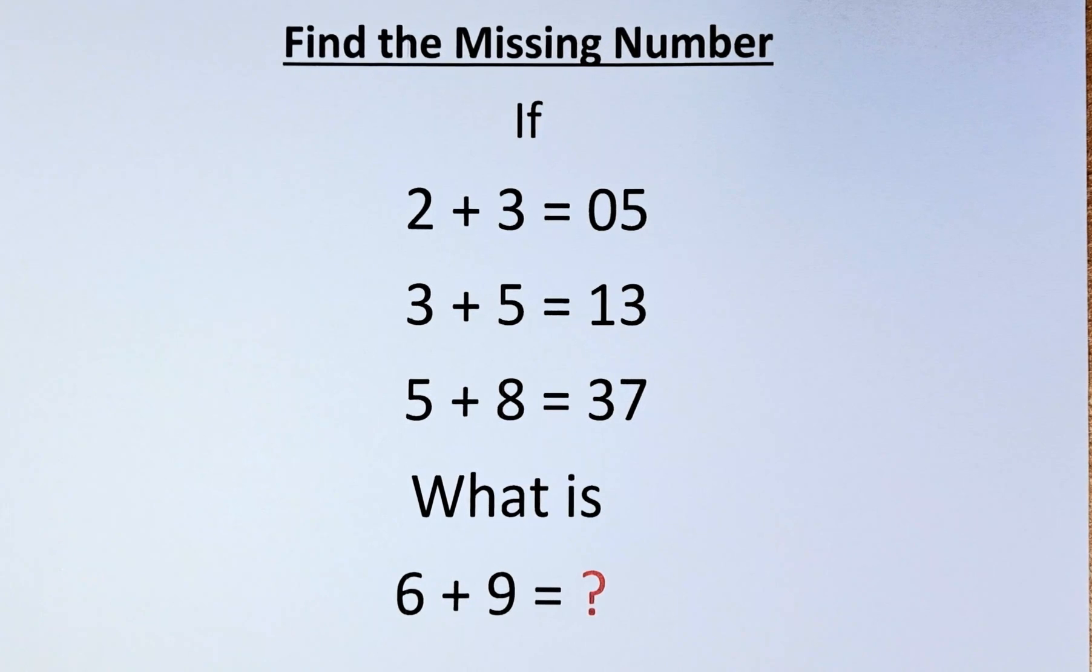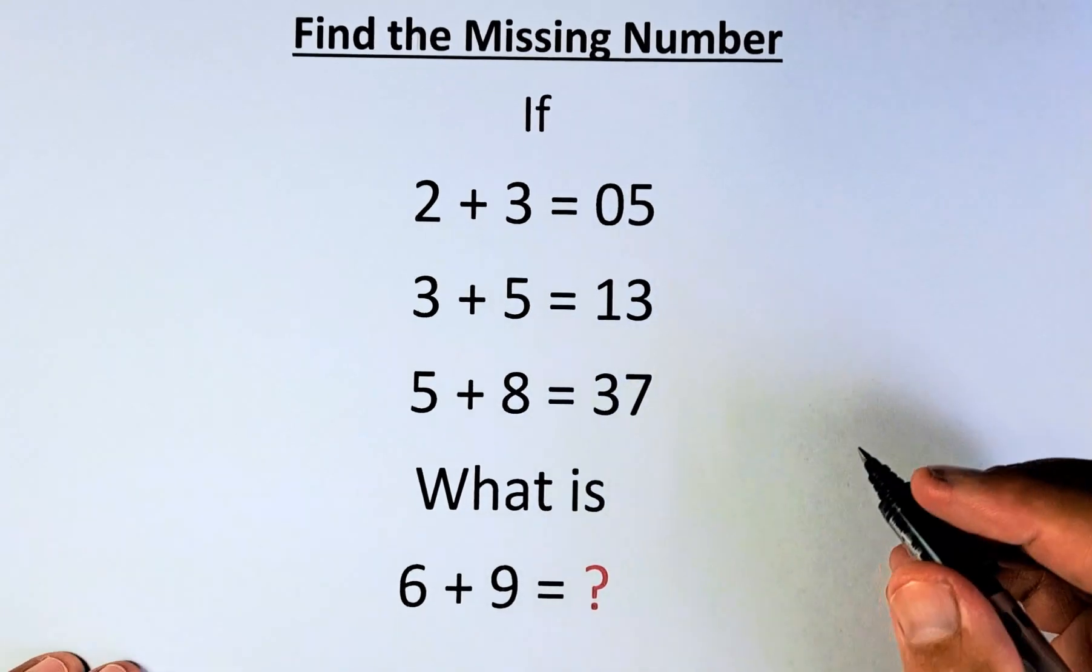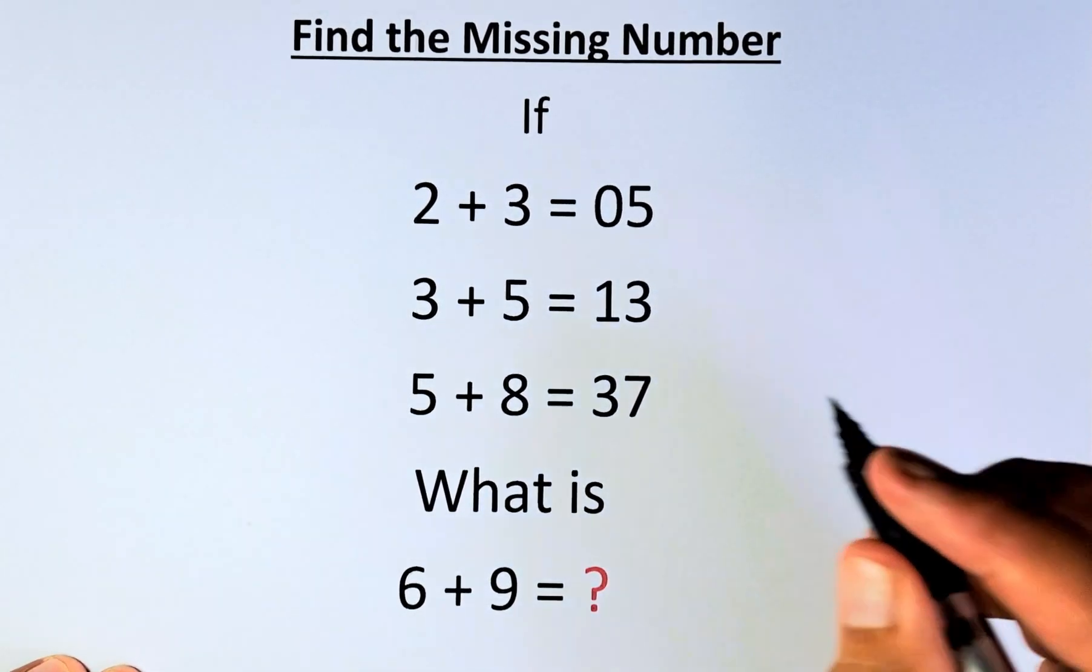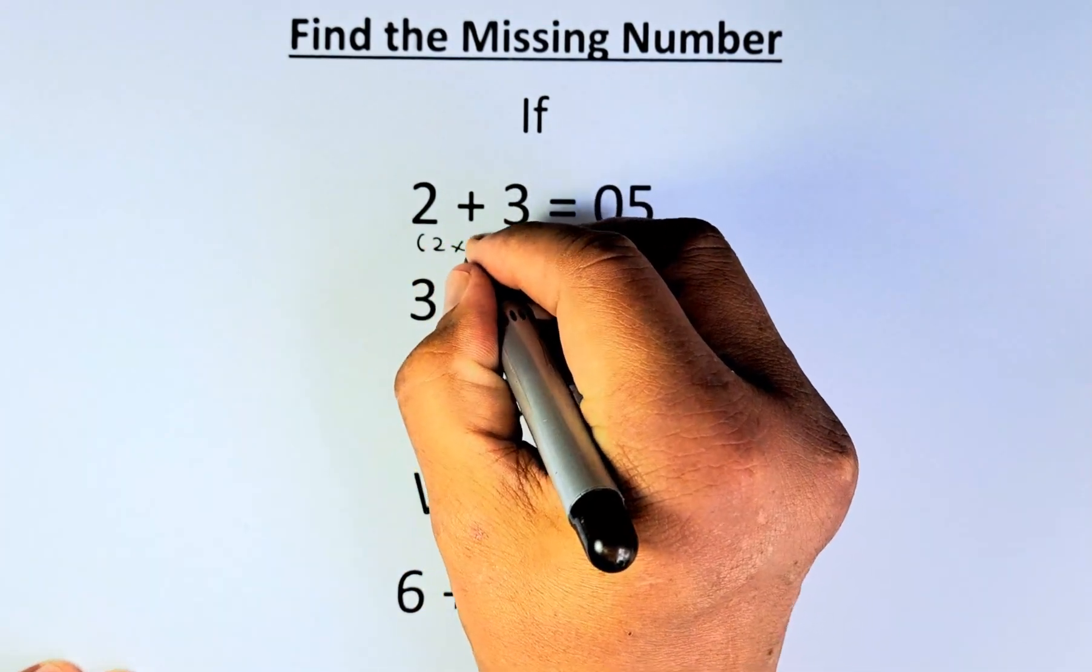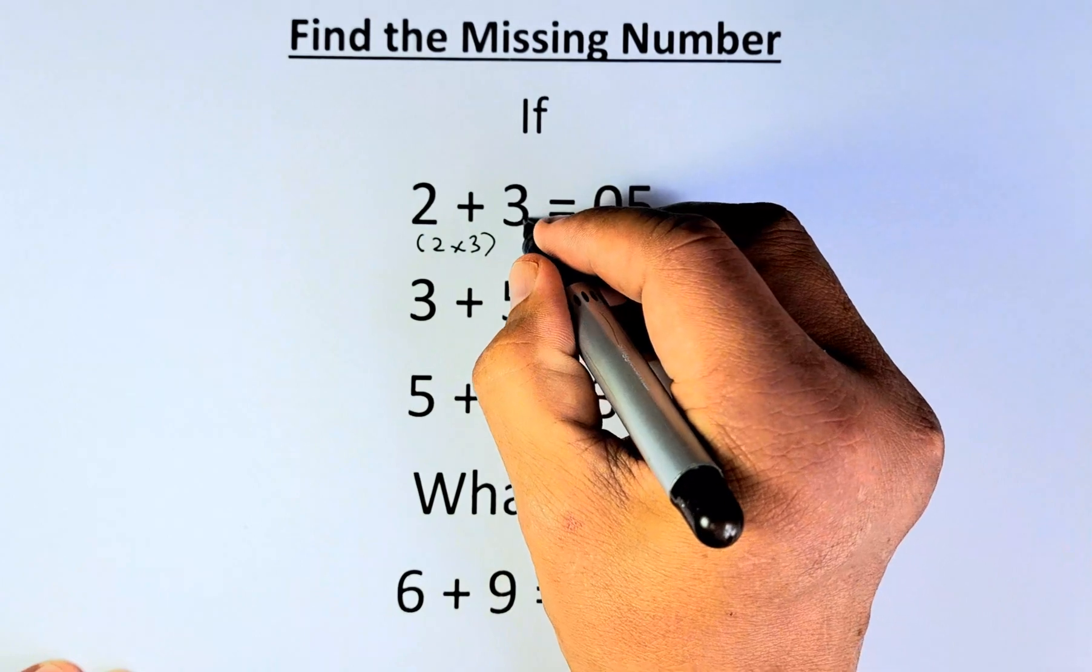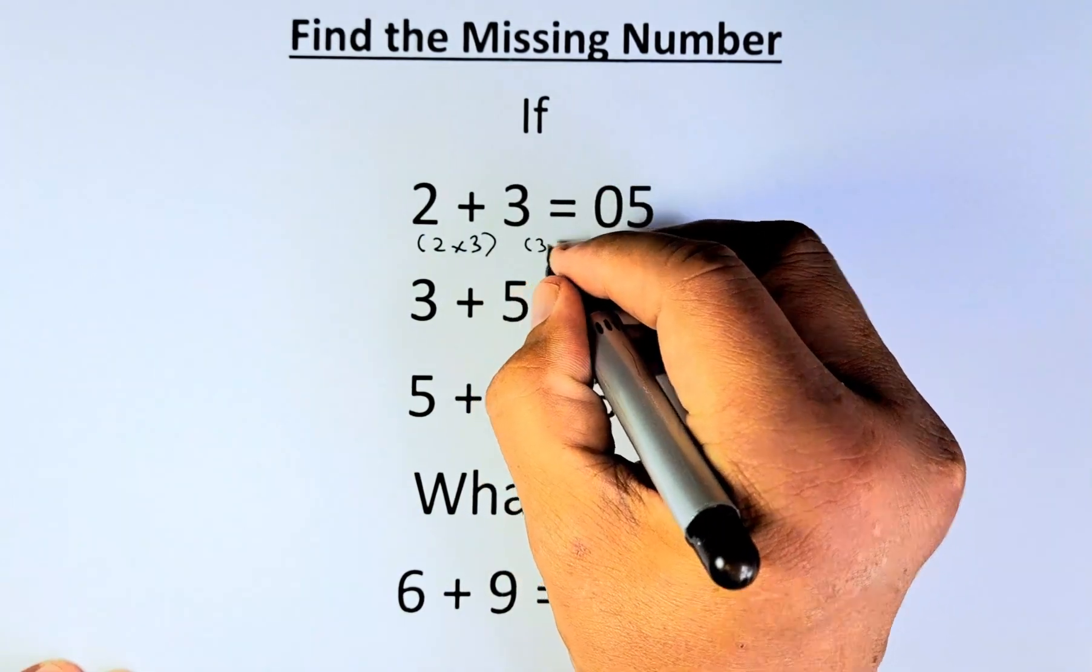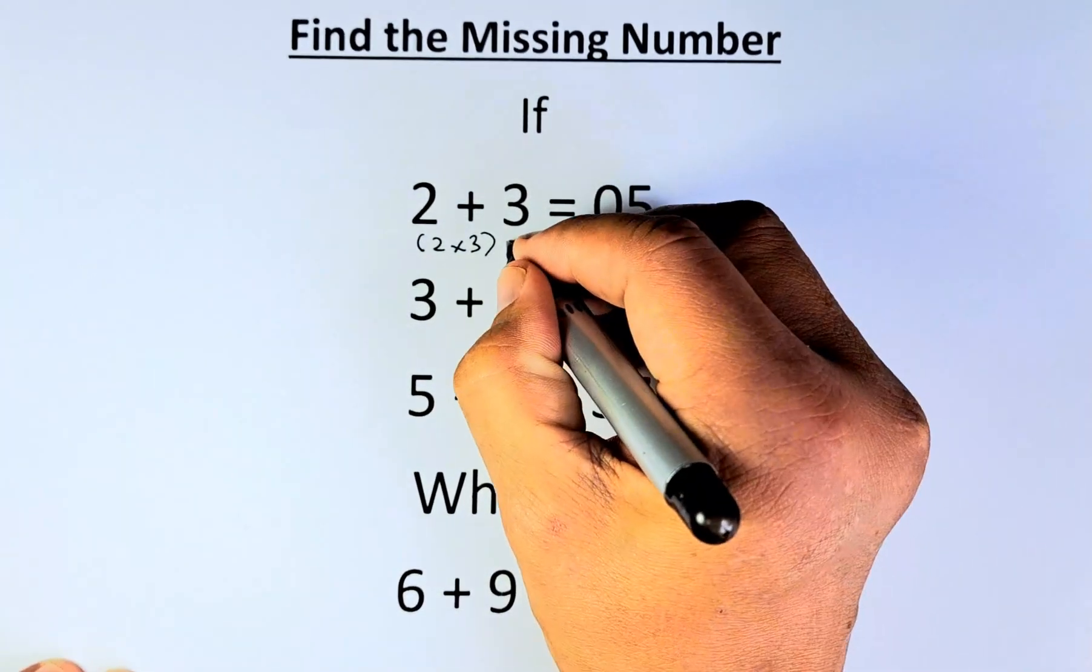So 2 plus 3 equals 05, 3 plus 5 equals 13, and 5 plus 8 equals 37. Without further ado, I'll give you the solution right now. What you do is multiply the two numbers, so 2 multiplied by 3, and then take the second number minus the first number, and then minus that off.